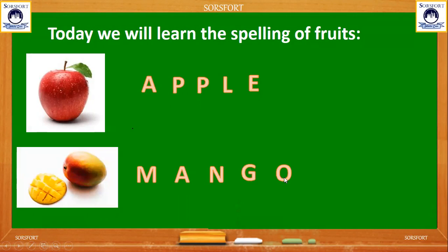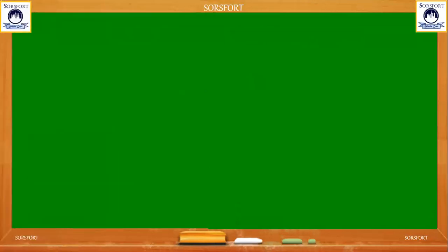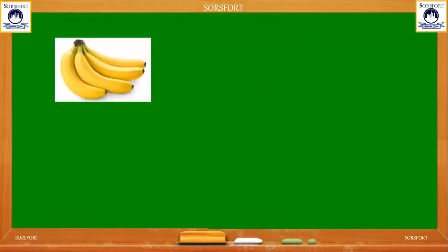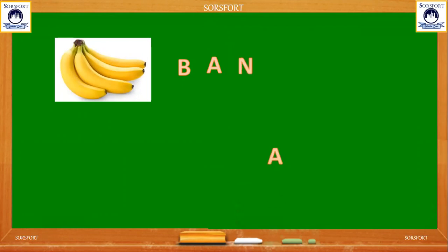Come to the next slide. Now this is a picture of banana. Banana. So in banana, which letter is coming first? B, then A. So it becomes banana.